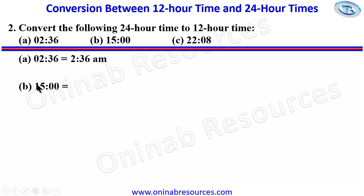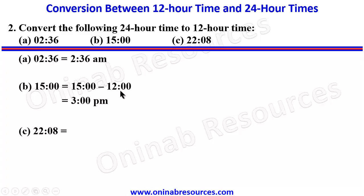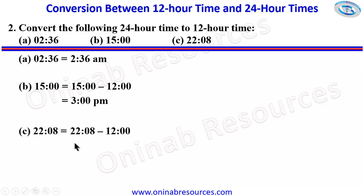For B: since the hour is greater than 12, we subtract 12 hours to get the 12-hour time equivalent. So 1500 minus 1200 gives 300, which is 3:00 p.m. When it is greater than 12, we label it p.m. For C: in the same way, we subtract 12 from 2208, giving 2208 minus 1200, which is 10:08 p.m.